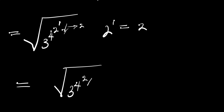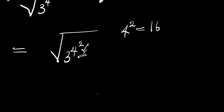The next thing is to consider 4^2. We have 4^2, which simply equals 4 times 4, and that is 16. So we replace this with 16, giving us the square root of 3^16.